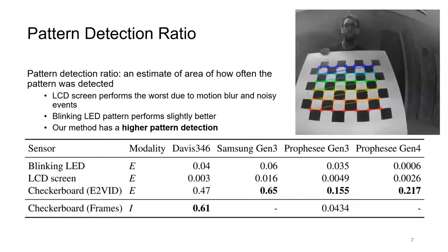The pattern detection ratio metric provides an estimate of how often the pattern was detected. The LCD screen has a low detection ratio due to motion blur and noise. The blinking LED performs slightly better. In contrast, our method outperforms the baselines and performs similar to the frame-based method for Davis 346.